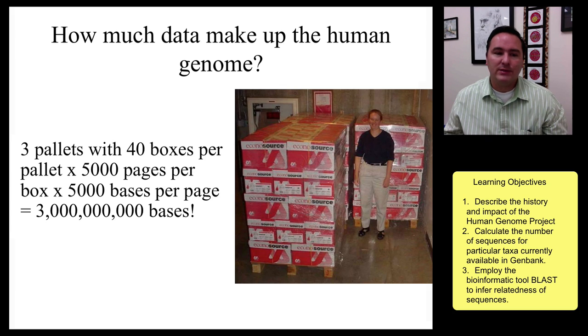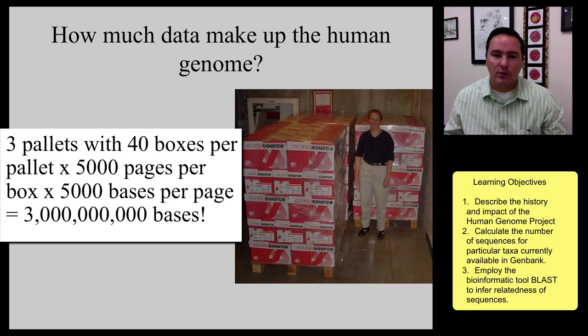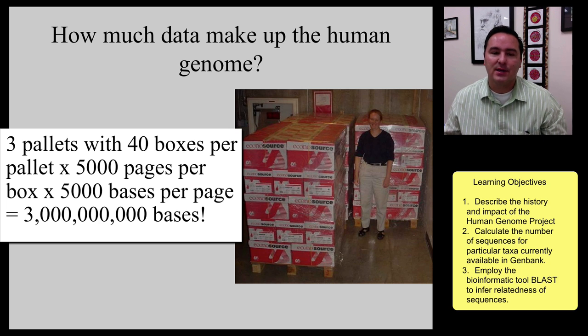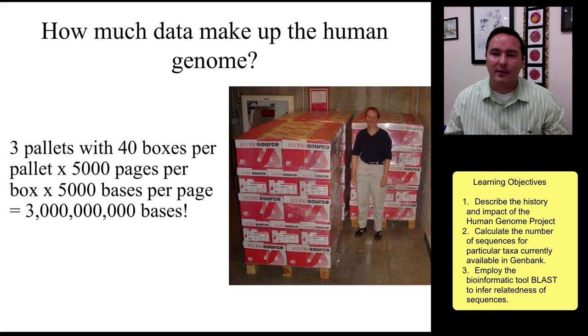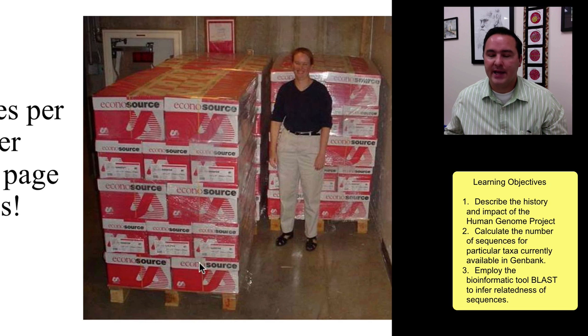It would take three pallets with 40 boxes per pallet, with 5,000 pages per box, with those 5,000 nucleotide bases per page. That would get you to 3 billion. So you know, this is about what it would take to write the Human Genome of one person.